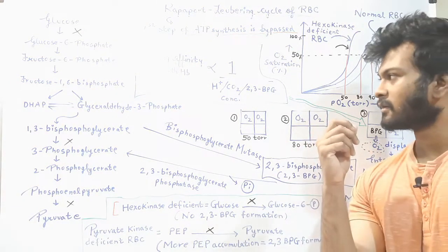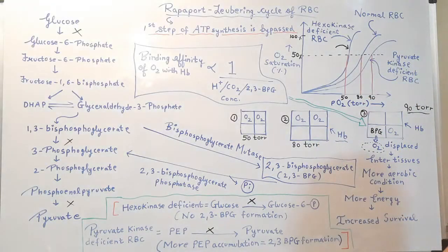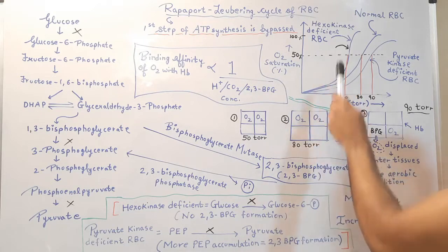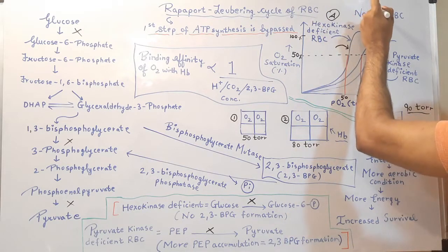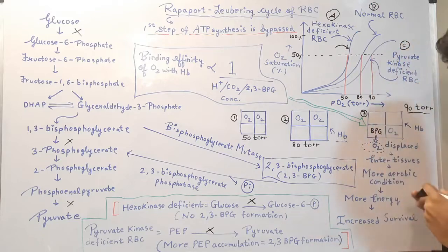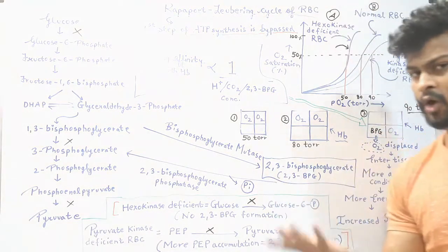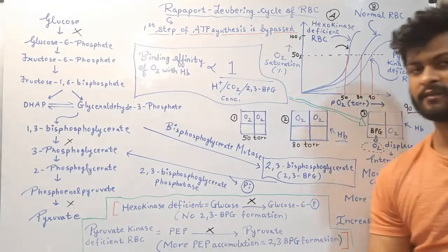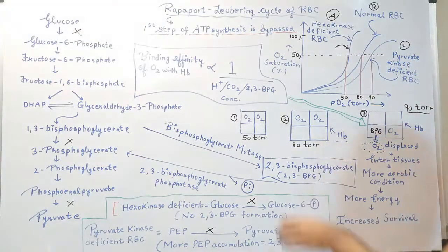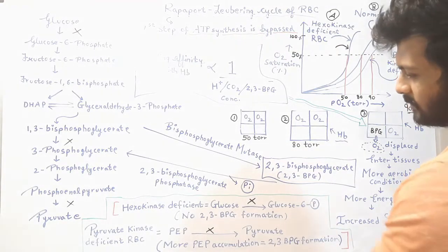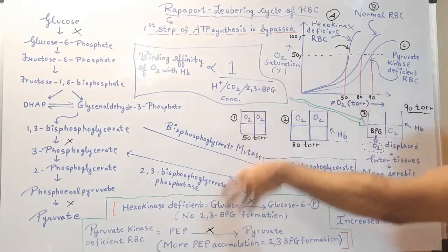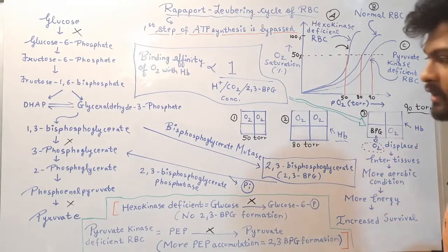In CSIR-NET Part C, if a conceptual or experimental-based question comes asking which curve A, B, or C represents hexokinase-deficient, normal, or pyruvate kinase-deficient RBC, you can write down the relationship as a shortcut, then use this logic to interpret the graph. It won't be difficult at all.